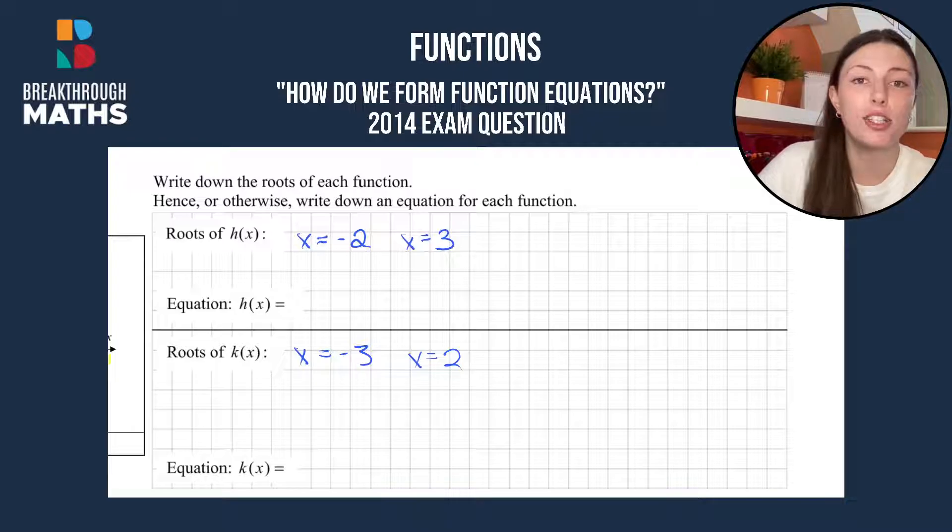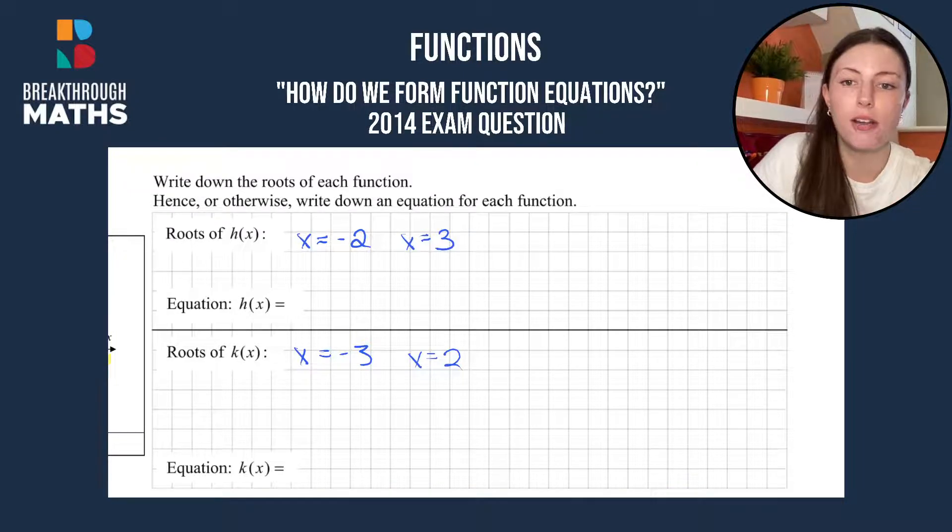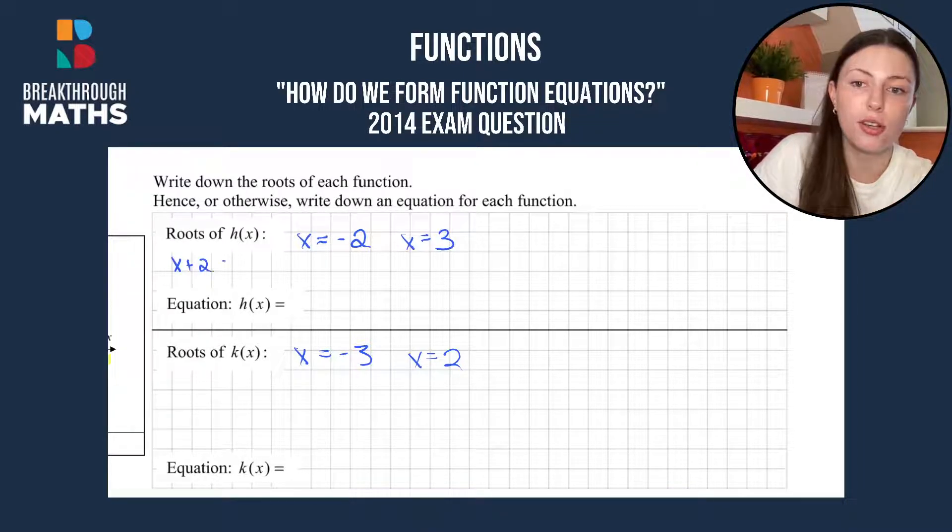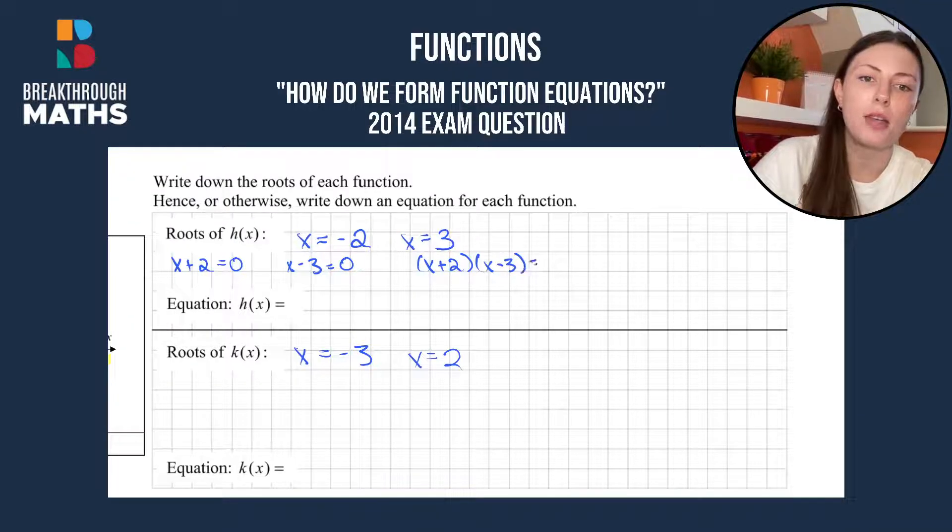We have x equals minus 2, so we'll bring that all to the left and we'll have x plus 2 equals 0. The 2 just changed to plus. Then x equals 3 will give us x minus 3 equals 0. We then put these in brackets, so x plus 2 and x minus 3, and we put them equal to 0.